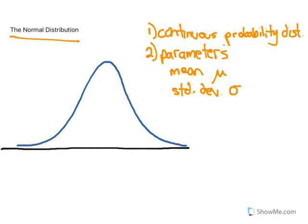The mean of any normal curve is always found straight down the middle of the curve. That's because if a random variable is normally distributed, the mean or average is the most common value that variable can take on. You can think of the height of any normal distribution curve as the frequency — the peak frequency happens at the mean, which is right in the middle. The standard deviation represents how wide and how spread out the rest of the data is around the mean.